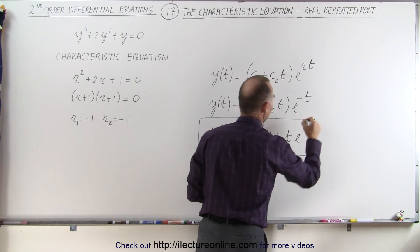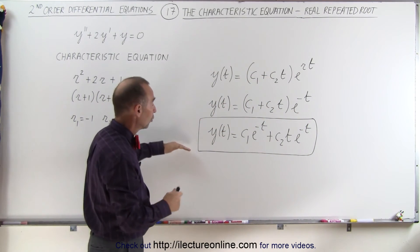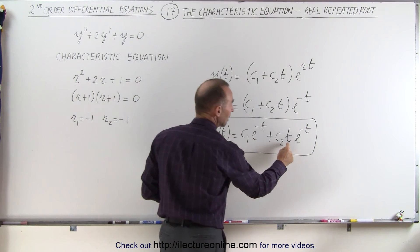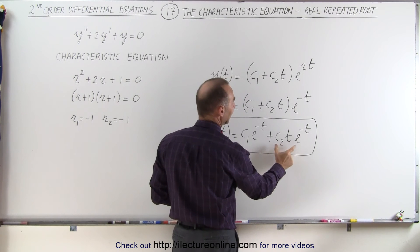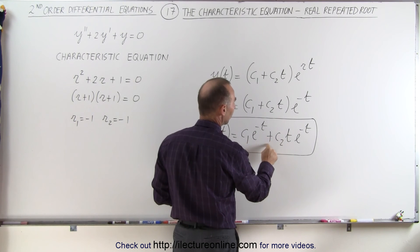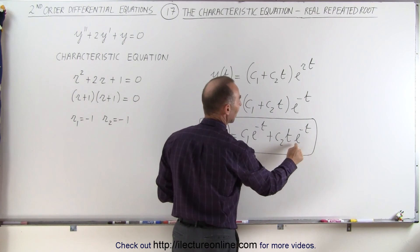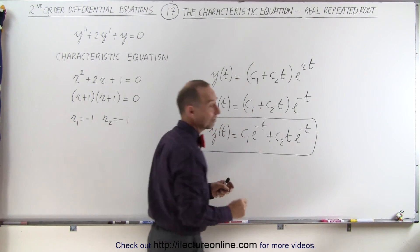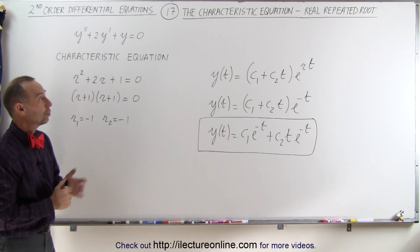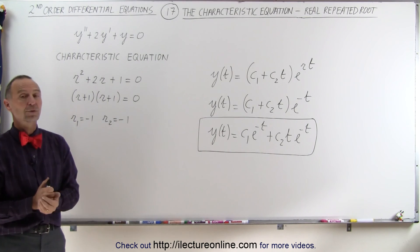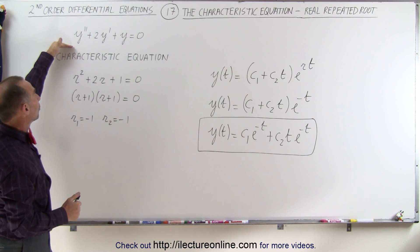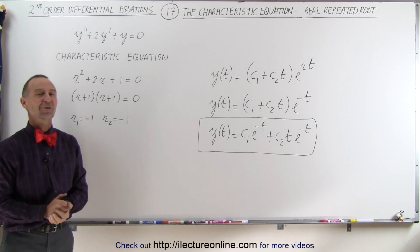Basically, the main difference between having two distinct roots and a repeated root is that we add the variable t in the second term. So we have c1 e to the root times t, plus c2 times t times e to the root times t — where the root is the same repeated value. That's what you do when you have real repeated roots to find the general solution to the linear second order homogeneous differential equation.